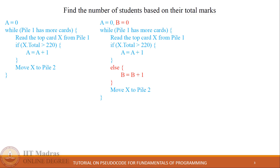In order to accommodate that count we add the else block. In this second pseudo code, we have written the original code and added the else block which executes when the if condition is false. Variable B, initialized to zero, gives us the count of students who have scored less than or equal to 220. But this approach will not work if we want to divide students into more than two categories.